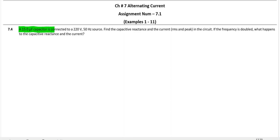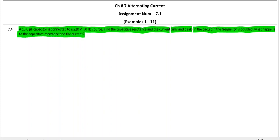a 15µF capacitor is connected to 220V 50Hz source. Find the capacitive reactance and the current, RMS as well as peak value of current in the circuit. If the frequency is doubled, what happens to the capacitive reactance and the current?